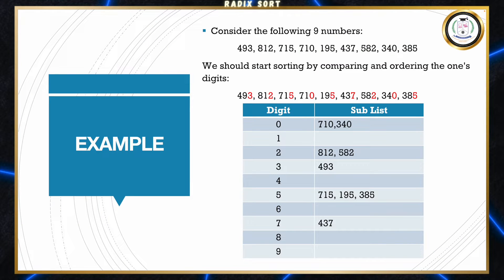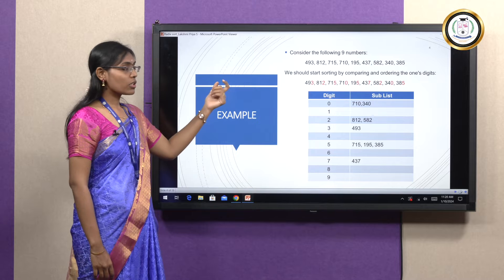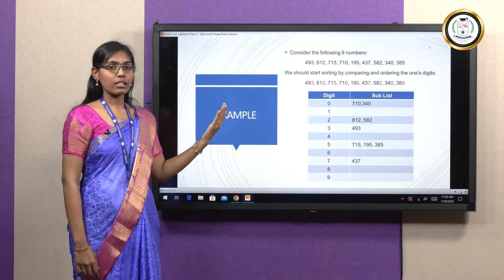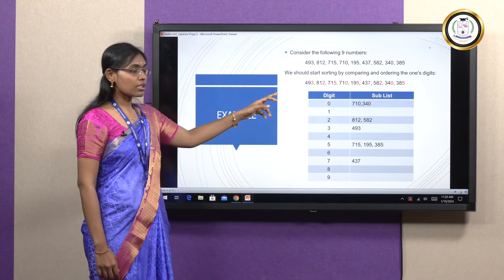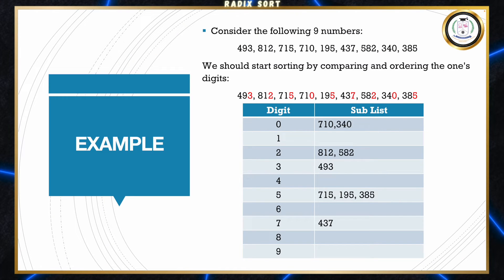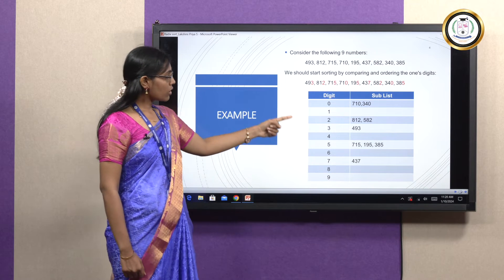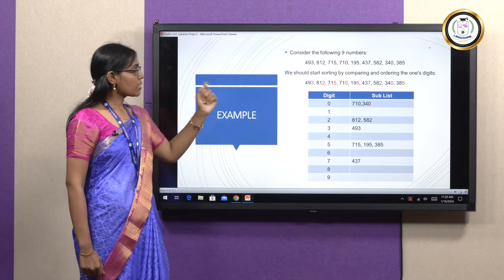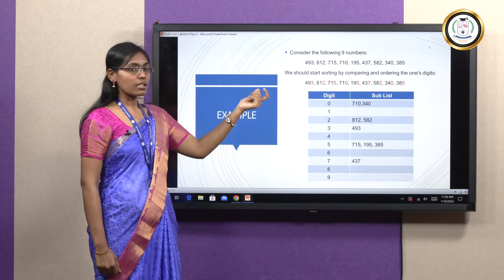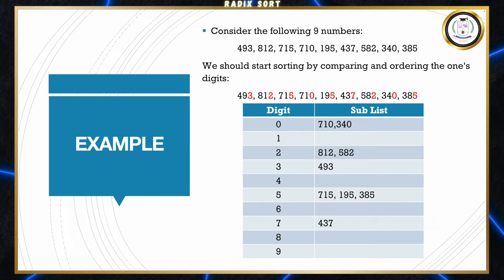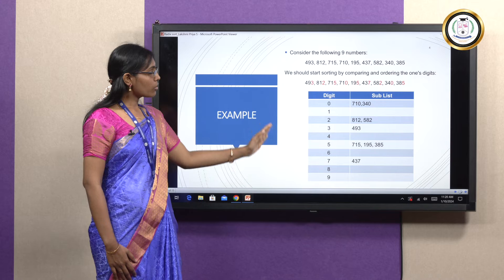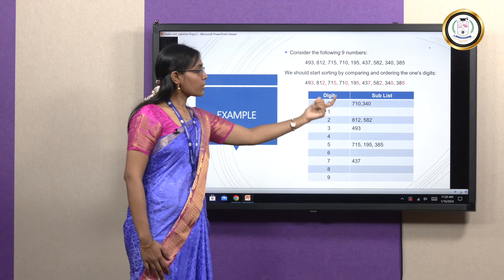Now let's see an example of Radix Sort. Consider 9 numbers, each of 3 digits. We start with the 1s digit, then 10s, then 100s. The red-colored digits indicate the 1s place. We have a digit list from 0 to 9. Based on the last digit, we put each number into its corresponding sub-list. For example, 493 — the last digit is 3, so we put 493 in sub-list 3. For 812, the last digit is 2, so we put 812 in sub-list 2. Likewise, we check each element of the array and place it by its last digit.